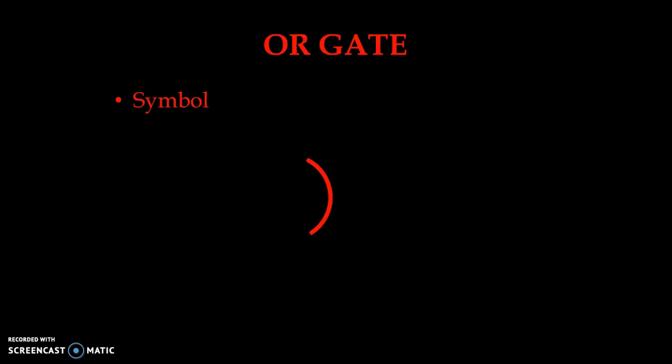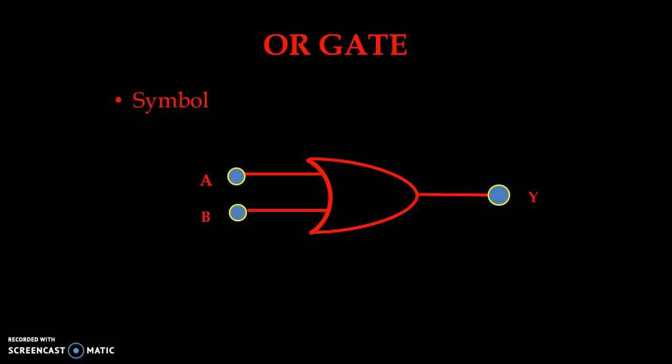Now we move on to the next gate. As I said earlier, AOI refers to the basic gates. After AND we have another operator known as the OR gate. Let us see the symbol — in the case of the OR gate we have a minimum of two inputs; more than two inputs are also possible. As you can observe, we have A and B as two inputs and one output Y.